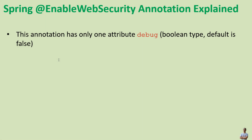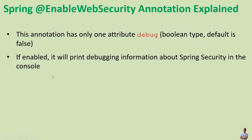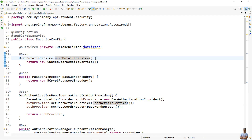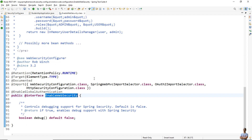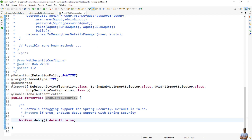The @EnableWebSecurity annotation has only one attribute named debug, which is a boolean type and the default value is false. If enabled, it will bring debugging information about Spring Security in the console. You can see the attribute debug of type boolean here, with a default value of false. It controls debugging support for Spring Security.